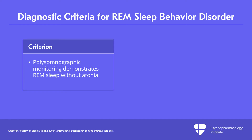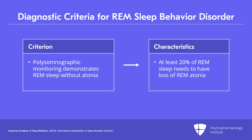Third, polysomnographic monitoring demonstrates REM sleep without atonia, known as RWA. A question frequently asked by sleep physicians is: how much loss of REM atonia do you need to feel confident in diagnosing REM sleep behavior disorder, since there's no absolute cutoff? Generally, at least 20% of REM sleep needs to have loss of REM atonia to feel confident with the diagnosis, particularly if there's a convincing clinical history of dream enactment.